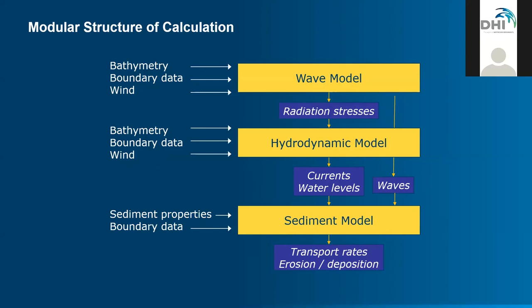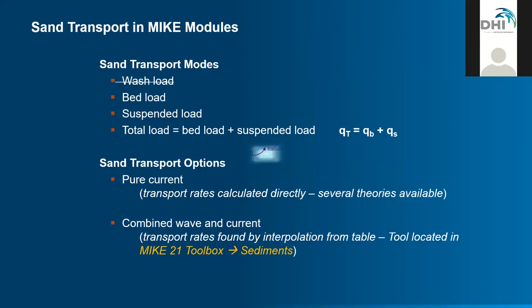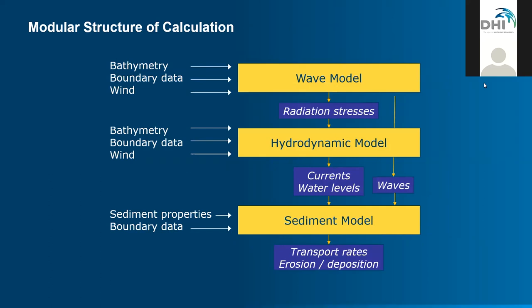MIKE21, MIKE3, and to some extent the Littoral Process FM and LITPAC modules use what we call a modular structure of calculation. This means the packages have different modules to describe different physical processes — you may remember the module selection interface. The reason you see different modules is because they all describe different physical processes, but they work together and transfer information from one to the other.